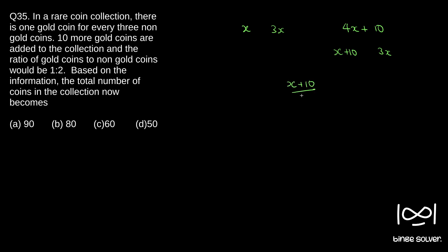Based on the information, the total number of coins in the collection now becomes... So if you solve for X, you can see 2X plus 20 is equal to 3X, or X is equal to 20.